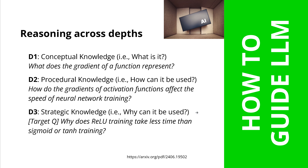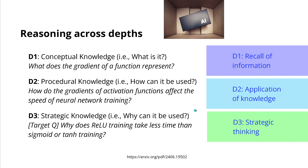Three complexity levels. You can call them D1 — the recall of information; D2 — the application of knowledge; and D3 — bringing it all together in complex strategic thinking.